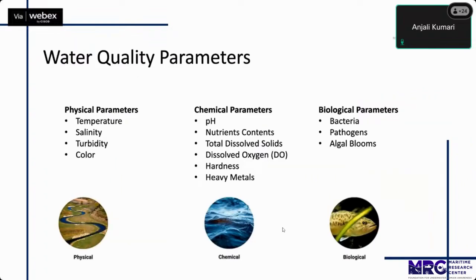Moving on to the water quality parameters I've been analyzing: the first category is physical parameters including temperature, salinity, turbidity, and color. Then chemical parameters including pH, nutrient contents, total dissolved solids, dissolved oxygen, hardness, and heavy metal contents. And then biological parameters including bacteria, pathogens, and algal blooms.